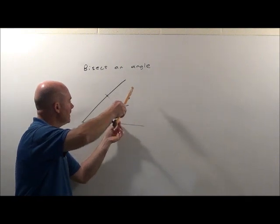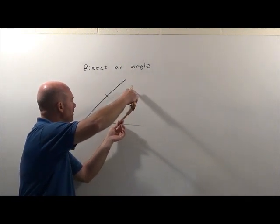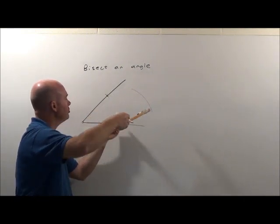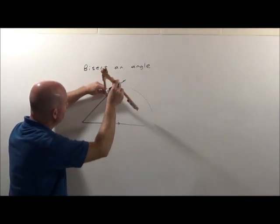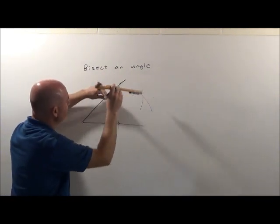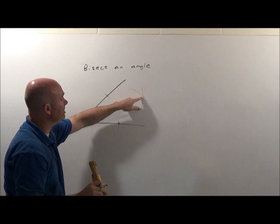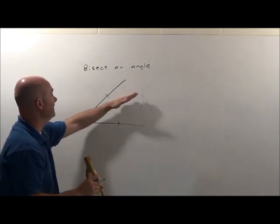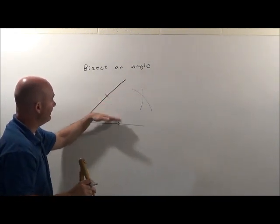So if I take it, put it on here, on that point, draw an arc, put it on this point, draw an arc, the intersection of them will basically be in the dead center of that angle.